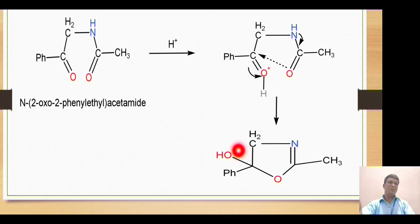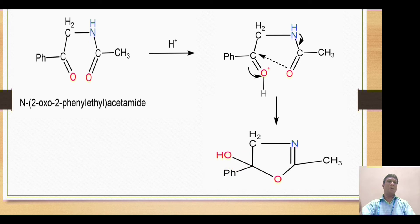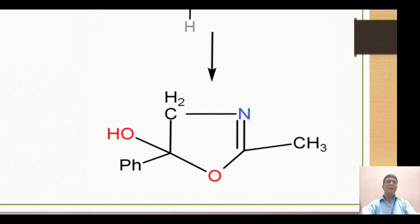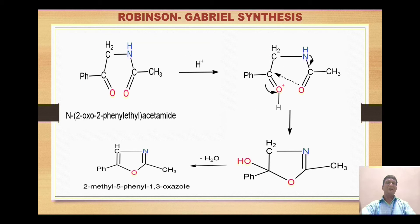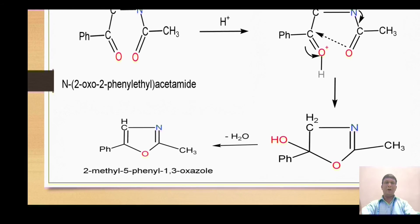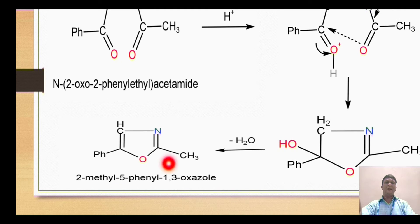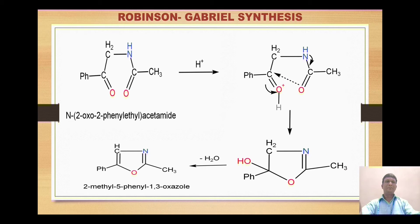This structure now contains a hydroxyl group and an alpha carbon bearing hydrogens. The hydroxyl group and one of those hydrogens combine to form a water molecule, which is released. A double bond is generated between the two carbons, so cyclization with loss of water gives the formation of the product, which is called 2-methyl-5-phenyl oxazole.